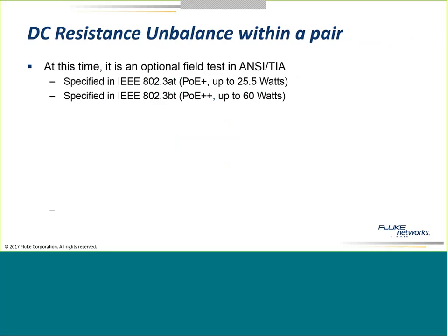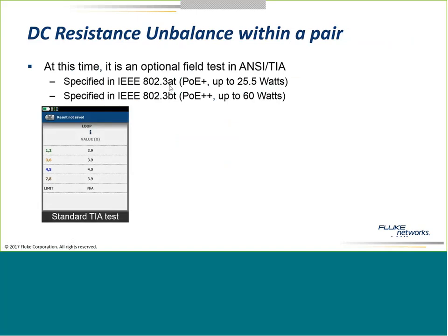In addition to loop resistance and resistive unbalance, we have new applications like PoE Plus and PoE Plus Plus, which take advantage of all four pairs. Running a standard Cat5e permanent link or channel test, the resistance shows an informative 'I' result — not pass/fail — because under a standard test there's no limit listed. We measure resistance because it's an important electrical parameter, but we don't apply pass/fail limits to it.